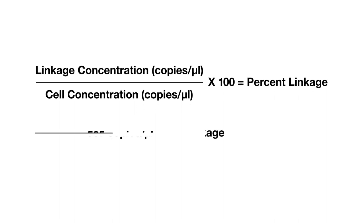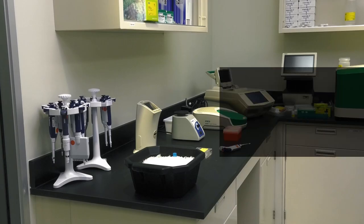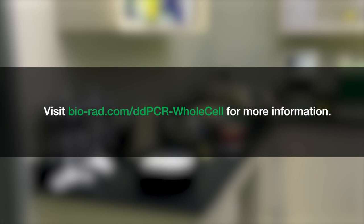In this example, we have a linkage concentration of 505 copies per microliter for RPP30 and SOD1 and an SOD1 concentration of 507 copies per microliter for a calculated 99% linkage, as expected. Ideally, linkage should be greater than 90% when following the protocol instructions. Visit Biorad.com/DDPCR-wholecell for more information.